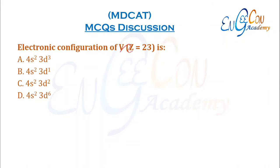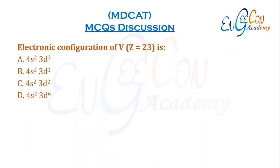Electronic configuration of vanadium: 4s² fills at atomic number 20. Vanadium has atomic number 23, so the next three electrons go into the 3d orbital. The configuration is [Ar] 4s² 3d³.